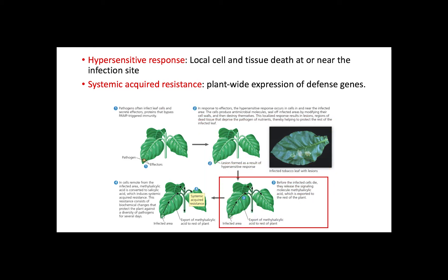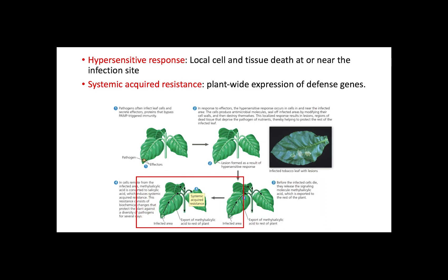However, before the cells at the infected site die, they release methyl salicylic acid to the rest of the plant. Methyl salicylic acid is then converted into salicylic acid and induces a systemic acquired resistance, which consists of biochemical changes that provide protection to the plant against pathogens for several days.